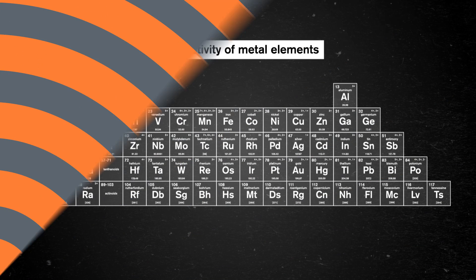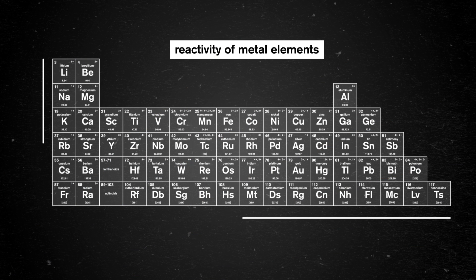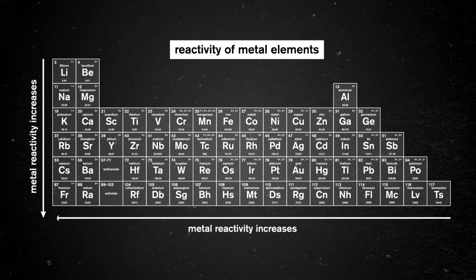So we need to know where elements fall in the activity series — a list of elements from most reactive to least reactive. Elements are more reactive the closer they are to the left side and the lower down they are on the periodic table. So elements at the bottom left of the periodic table are our most reactive, including lithium, potassium, calcium, sodium, and magnesium. Toward the other, less reactive end would be metals like silver and mercury.